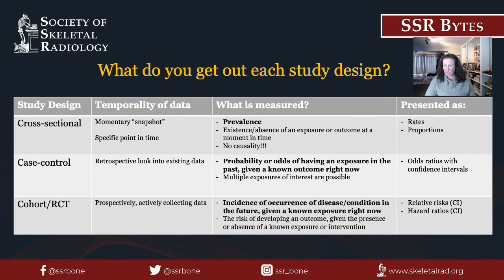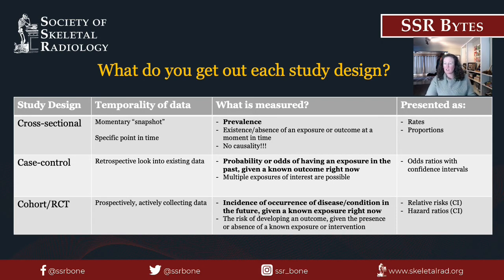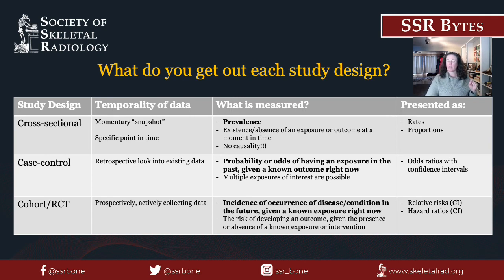So what do you get out of each of these study designs? We've already looked at the temporality and how data are collected for each. Case control studies involve looking back at existing data. Randomized controlled trials and cohorts collect data prospectively. In cross-sectional studies, we're looking at rates and proportions without any inference of causality. In case control studies, we want to know the odds of having an exposure given a known outcome — results are presented as odds ratios and confidence intervals. In cohort studies and randomized controlled trials, we assess the incidental occurrence of a disease or outcome, with results presented as relative risks or hazard ratios, also with confidence intervals.